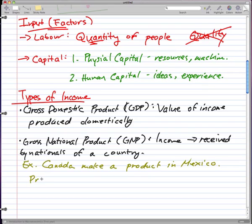The product is Mexico's GDP because they produced it in Mexico, produced domestically. So it's Mexico's GDP.